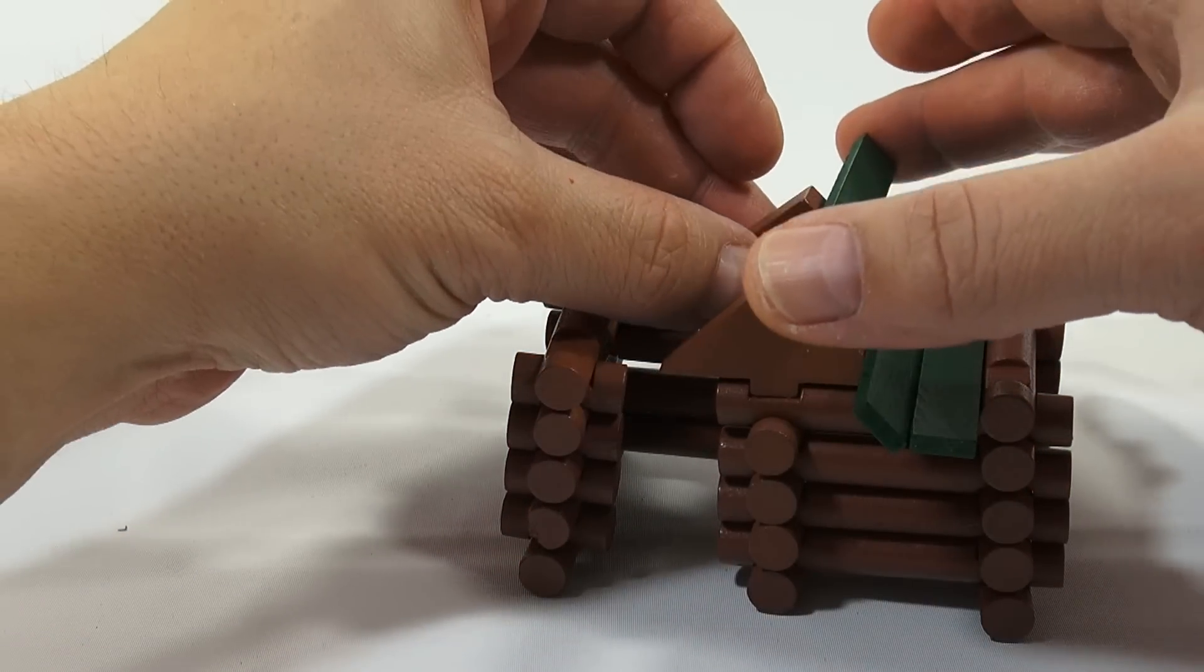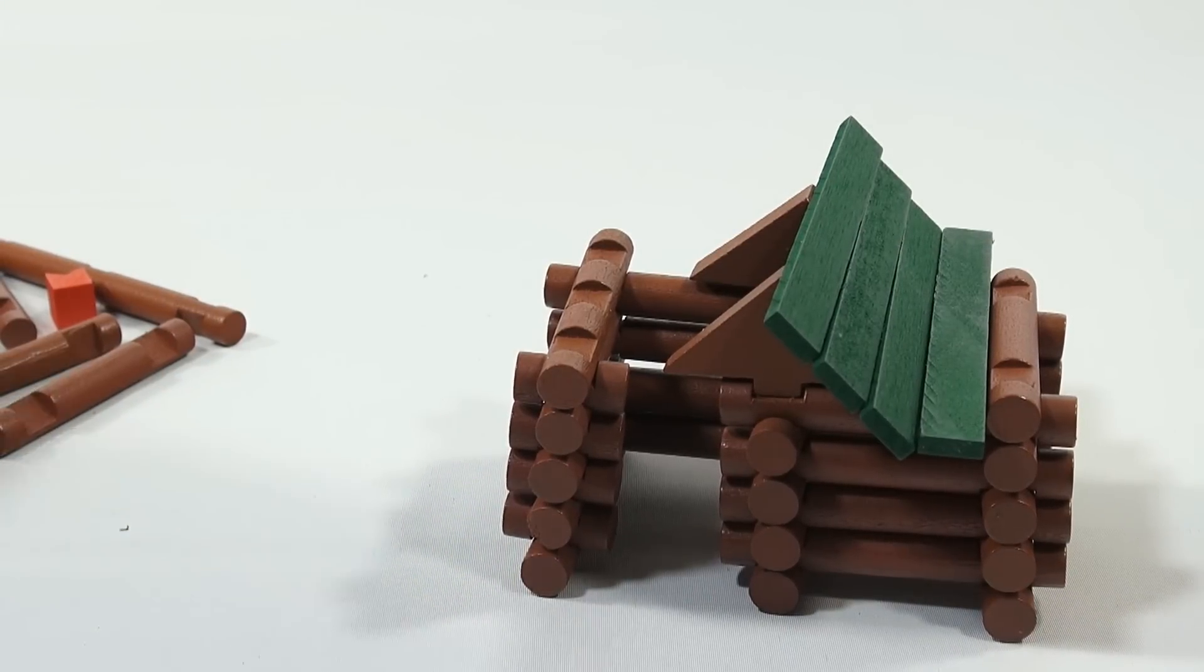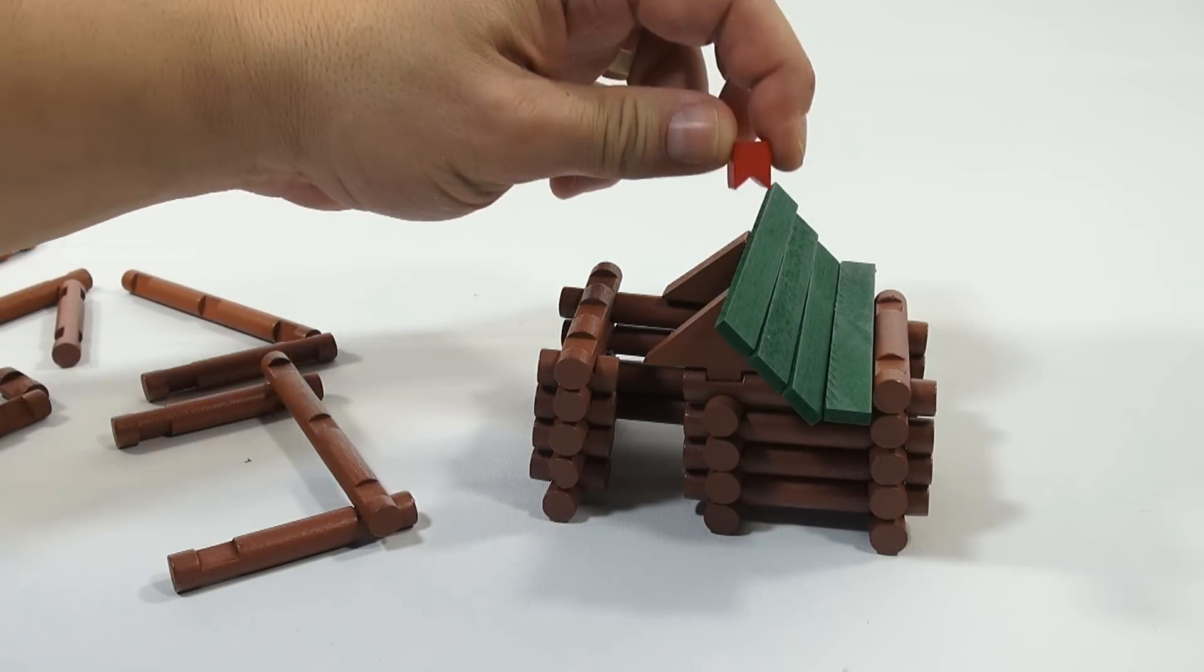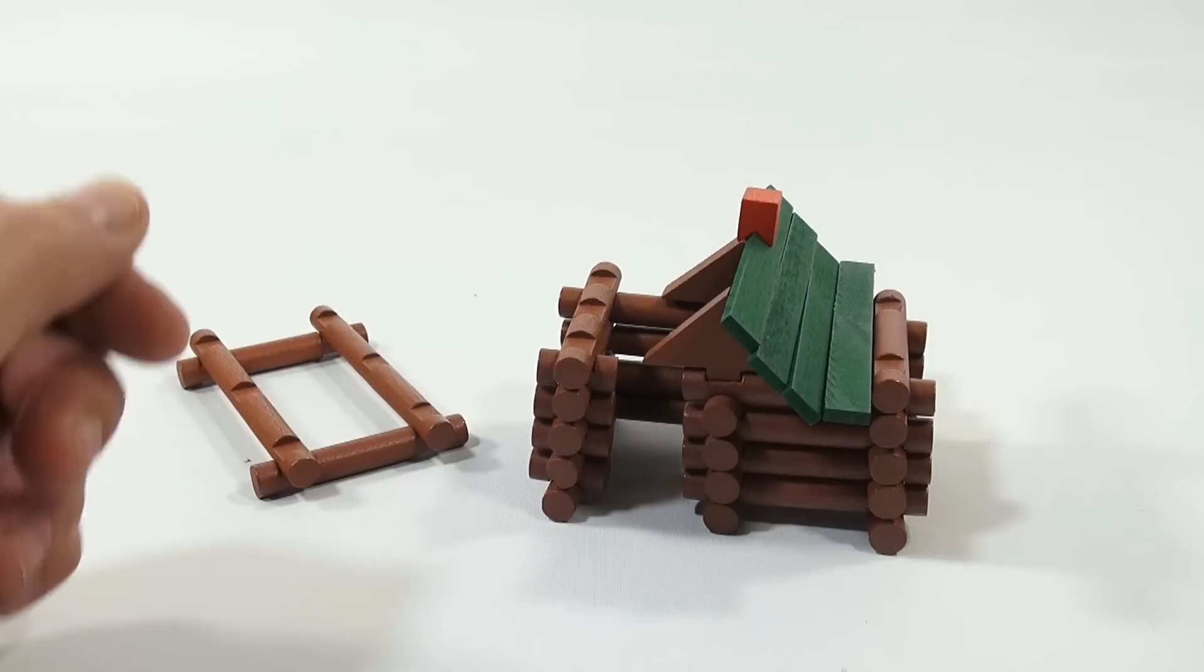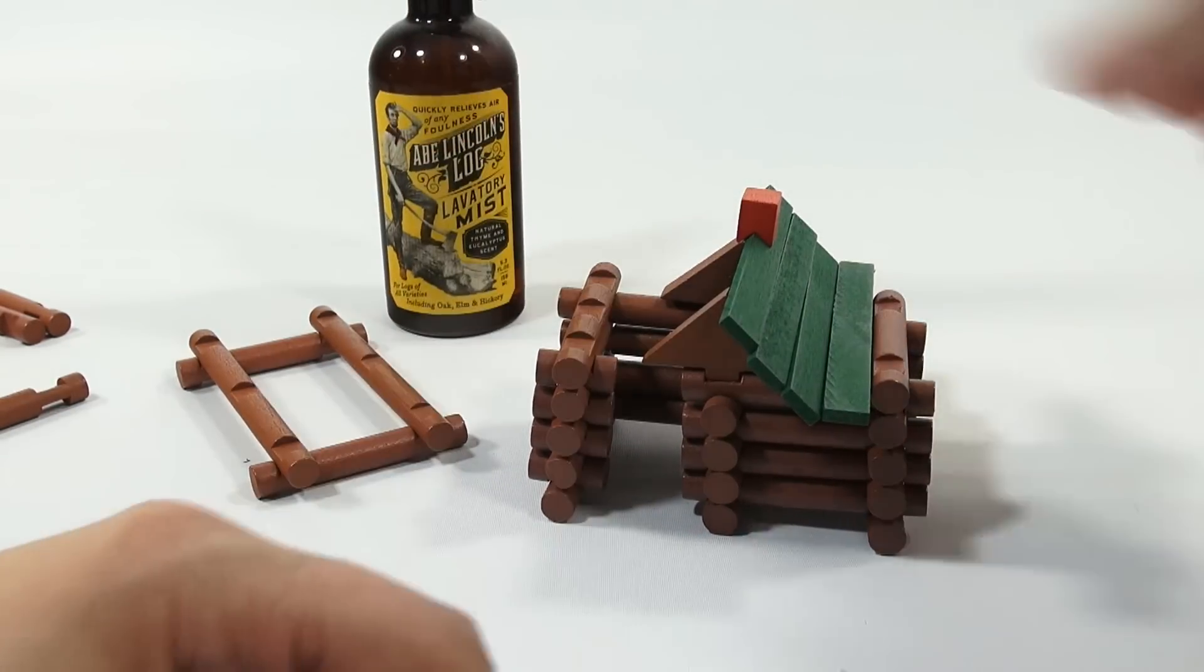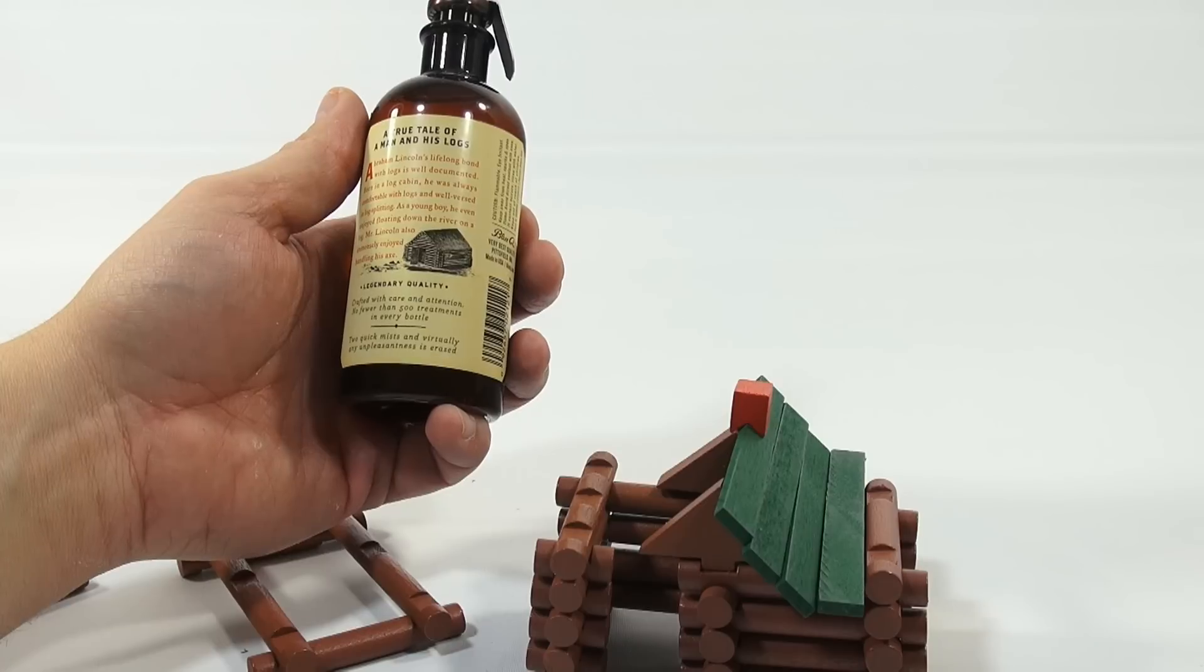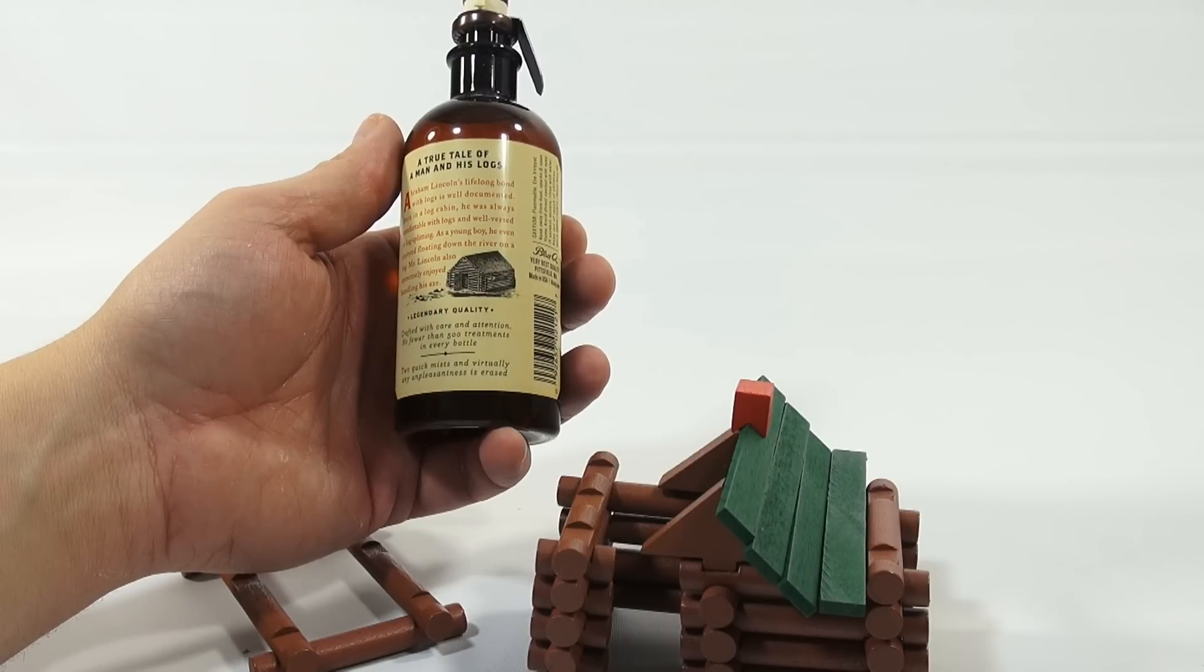So let's at least get our maybe a little stable yard out here for our horses. Now, while I'm doing this video, I'll say one more Lincoln product we have. LPS Jim picked this up since we're talking about Lincolns and Lincoln Logs. It's Abe Lincoln's Log Lavatory Mist—a bathroom spray, of course. They're just having fun. It says for logs of all varieties, including oak, elm, and hickory. A true tale of a man and his logs. Abraham Lincoln's lifelong bond with logs is well documented. Born in a log cabin, he was always comfortable with logs and well-versed in log splitting.